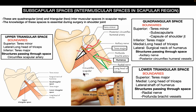To summarize visually: the upper triangular space consists of the circumflex scapular artery; the quadrangular space consists of the posterior circumflex humeral vessels and the axillary nerve; and the lower triangular space consists of the profunda brachiae artery and the radial nerve.